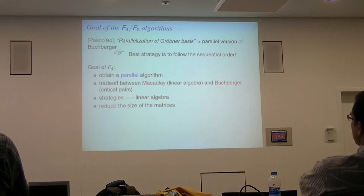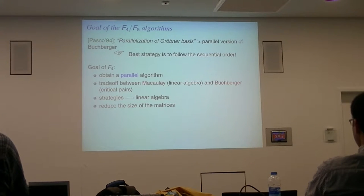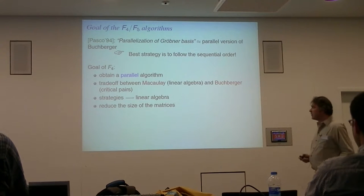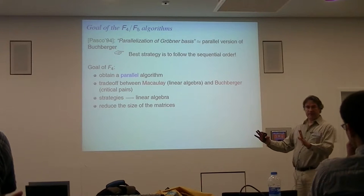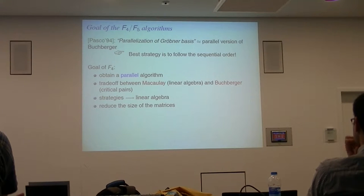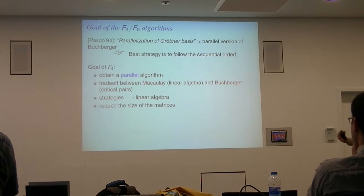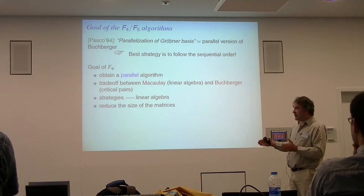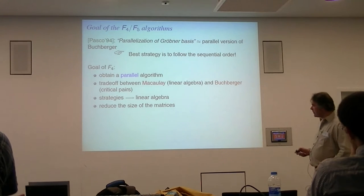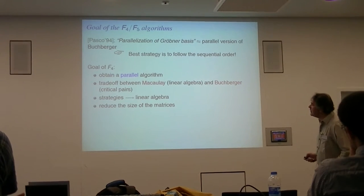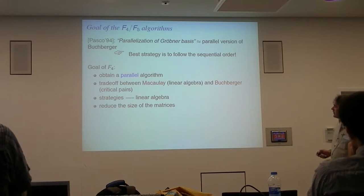One of my main motivations was to replace all the strategies in the Buchberger algorithm by linear algebra, so that you can obtain a parallel algorithm. Because with linear algebra it's clear — you build some matrix, you can analyze it, and you can perform parallel operations without changing the rest of the algorithm. You just perform Gaussian elimination on this matrix. So in some sense, F4 is a kind of tradeoff between Macaulay and the Buchberger algorithm — we keep the best of the two techniques: linear algebra from Macaulay, and the critical pair algorithm from Buchberger.